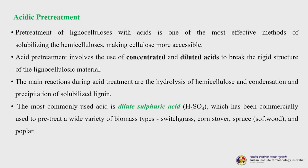Pretreatment of lignocellulose with acids is one of the most effective methods of solubilizing hemicellulose and making cellulose more accessible. Acid pretreatment involves the use of concentrated and dilute acids to break the rigid structure of lignocellulose material. The main reactions during acid treatment are hydrolysis of hemicellulose and condensation and precipitation of the solubilized lignin. The most commonly used acid is dilute sulfuric acid, which has been commercially used to pretreat a wide variety of biomass types such as switchgrass, spruce and poplar.